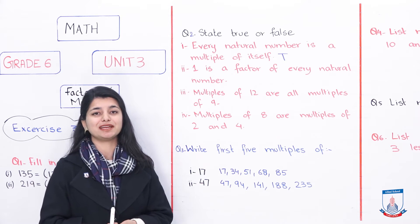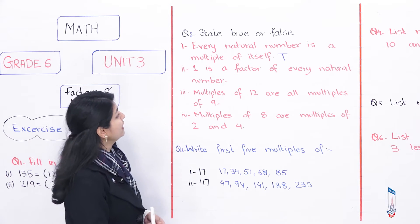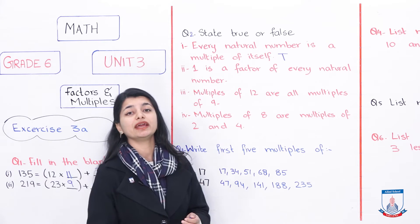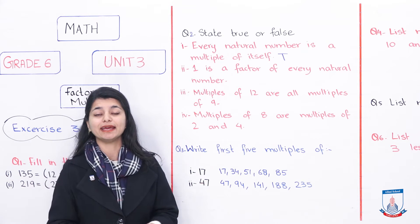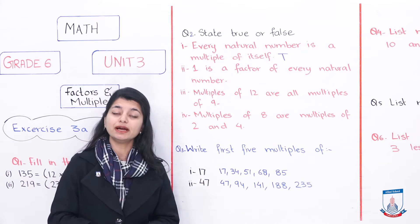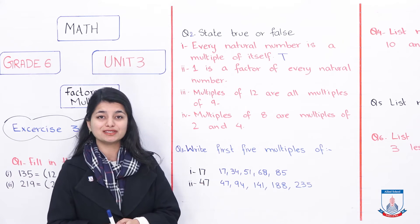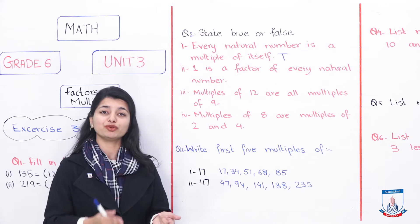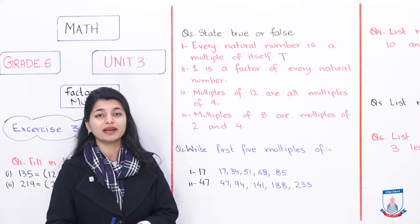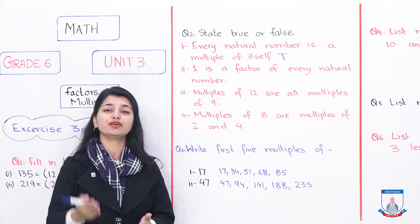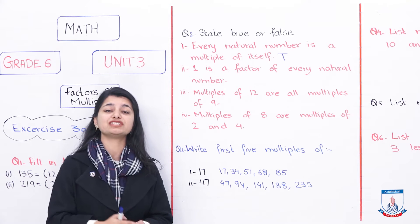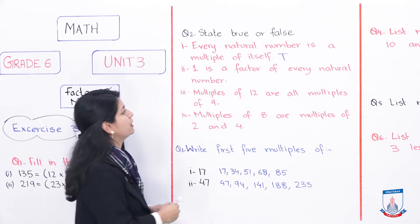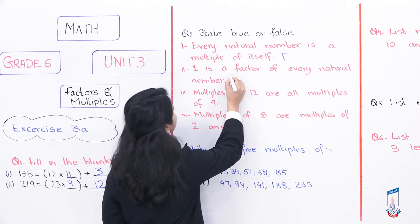The second statement is: one is a factor of every natural number. That is true. Even prime numbers have 1 as a factor. Every number divided by 1 gives the same number, so this is true.